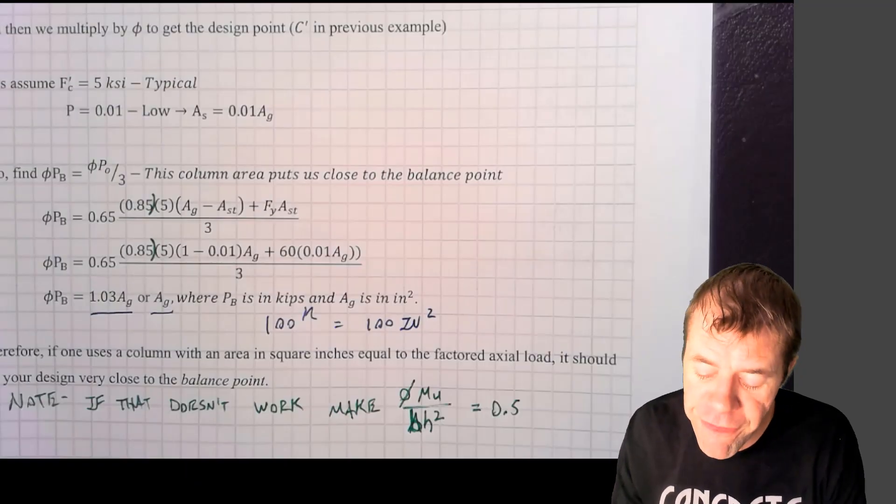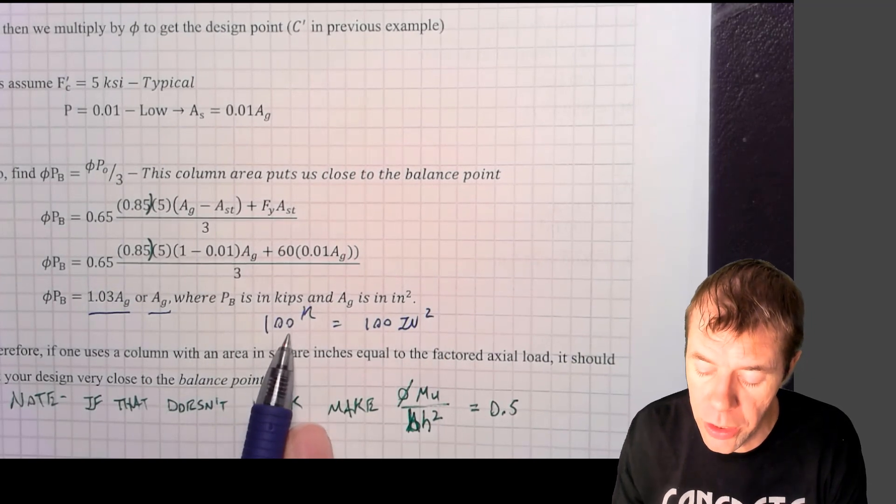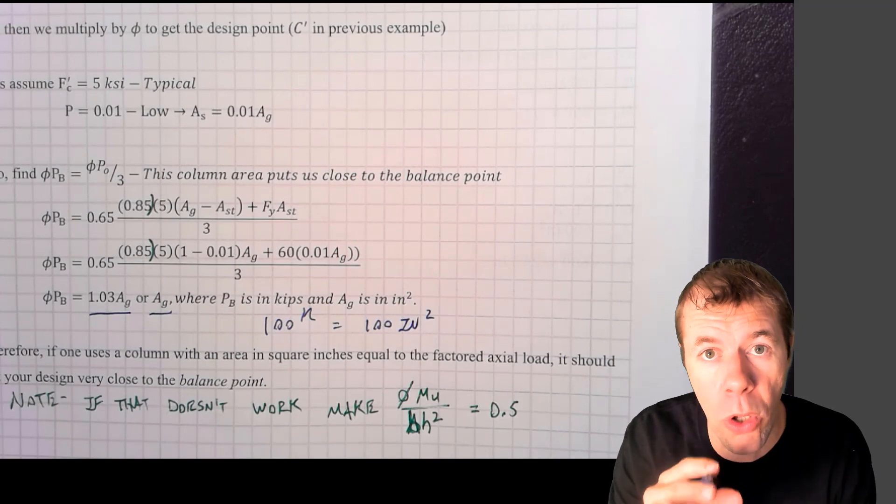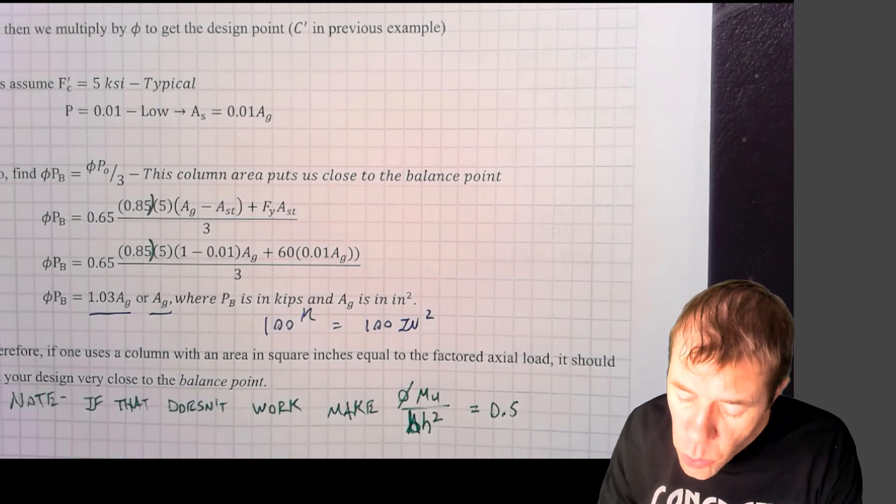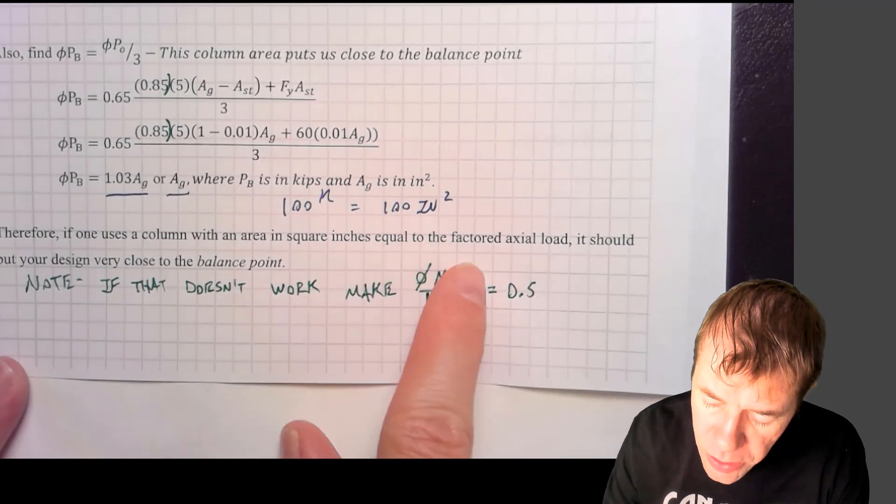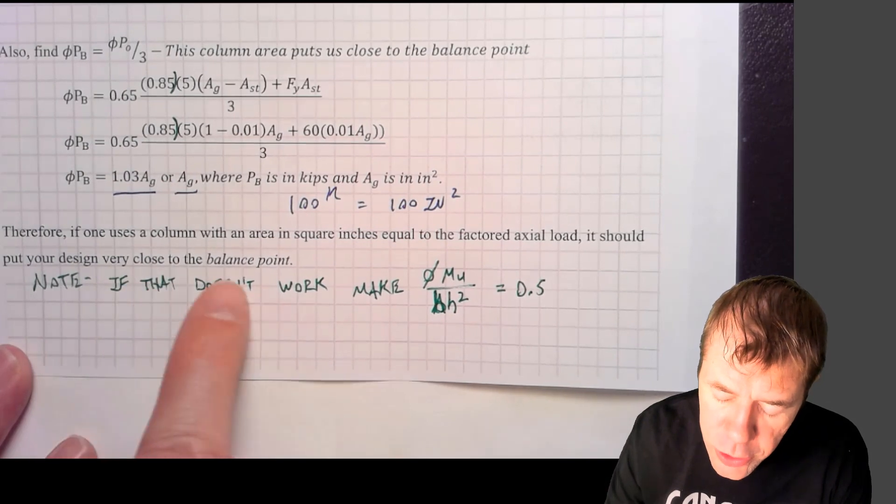What? Pretty cool, huh? Make sure this is the factored load, not the unfactored load, but as long as you use the factored load here, this gives you a great estimate if axial load controls. So, therefore, if one uses a column with an area in square inches equal to the factored axial load, it should put your design very close to the balance point.